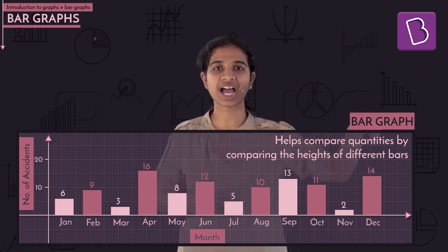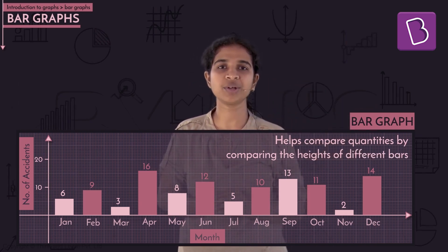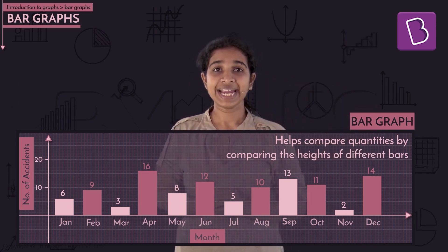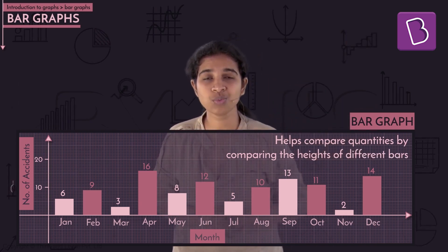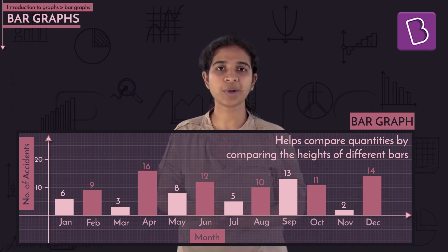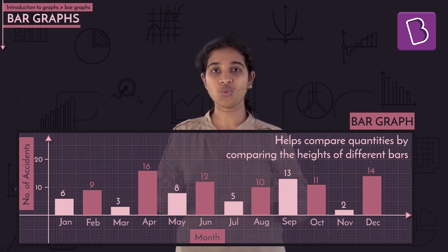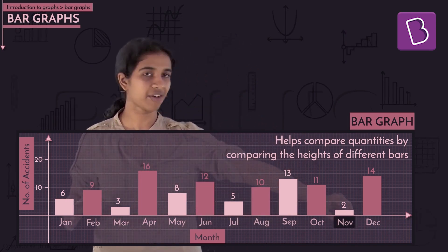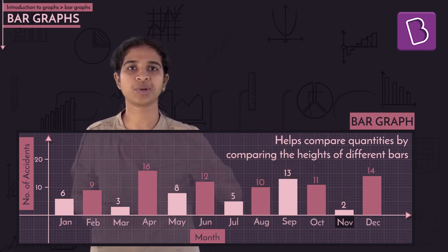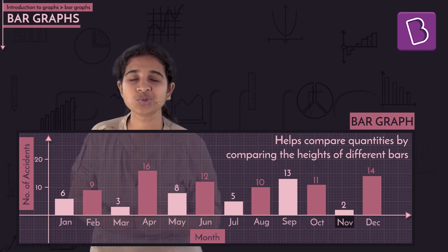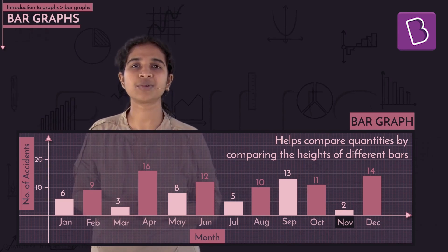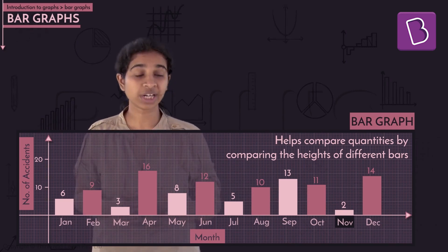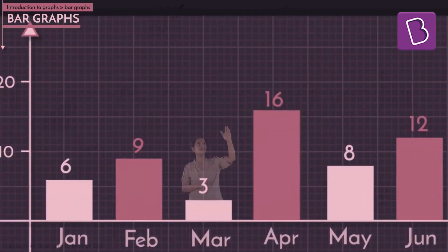A bar graph makes it very easy to compare quantities by comparing the heights of the different bars. You can easily identify the smallest bar — November is the shortest, meaning fewest accidents — and the tallest bar, April, meaning the most accidents that month.